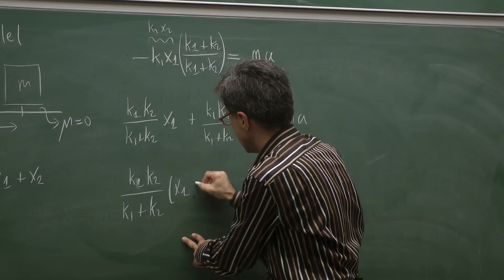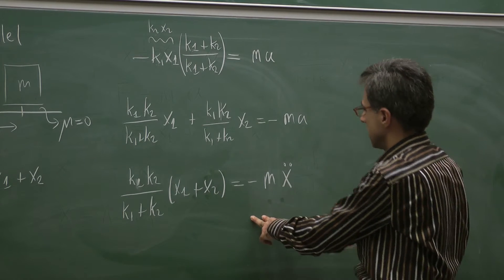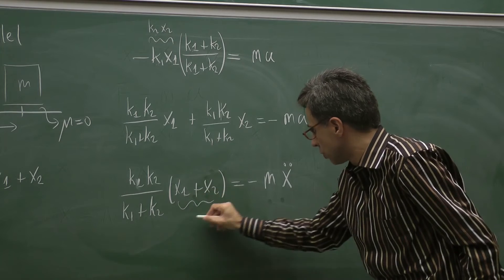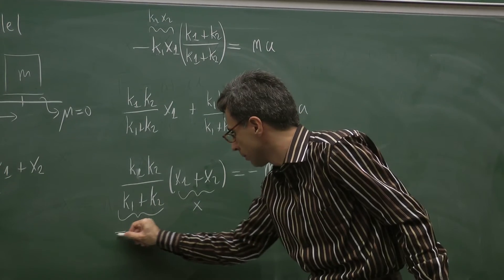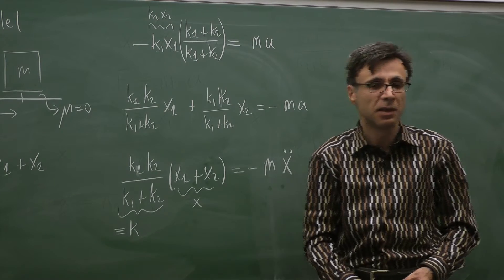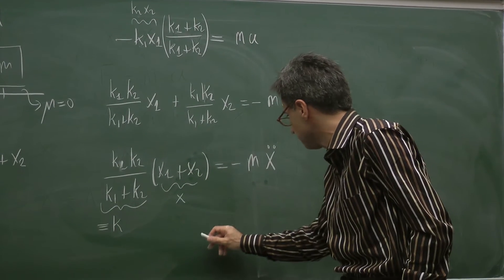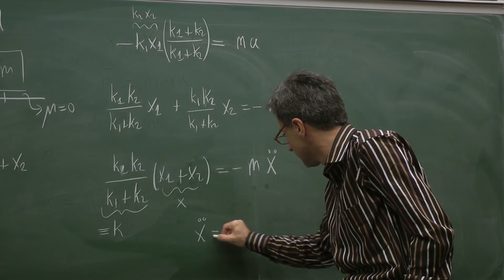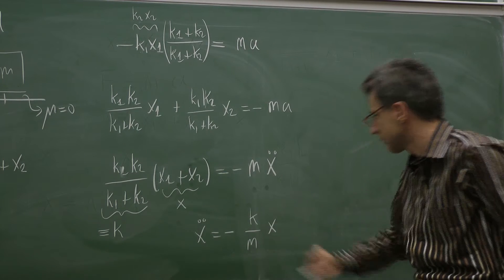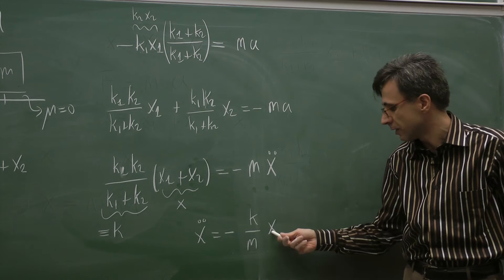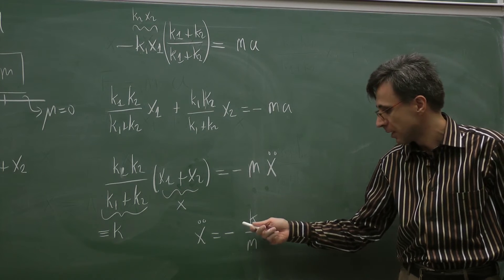So that gives us k1 k2 divided by (k1 plus k2) times (x1 plus x2) equals negative m times x double dot. Note that x1 plus x2 equals x. If we define k_effective as k1 k2 over (k1 plus k2), then this equation becomes simply x double dot equals negative k over m times x — a second order differential equation where the second derivative equals a negative constant times itself.